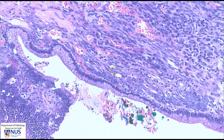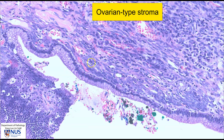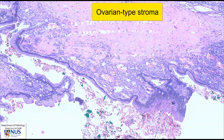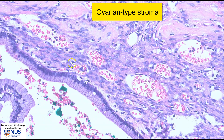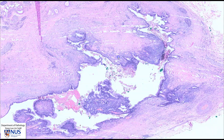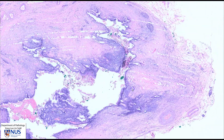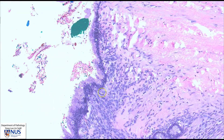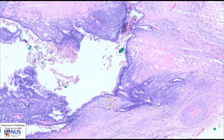There is another feature that is demonstrated nicely here. Just beneath the epithelium, we can see a very cellular spindle cell stroma. This stroma resembles normal ovarian stroma. We can see the spindle cell stroma in other areas as well, and it is well demonstrated in this region. This ovarian-type stroma is very classical for mucinous cystic neoplasm.